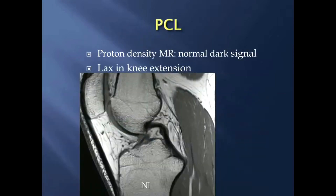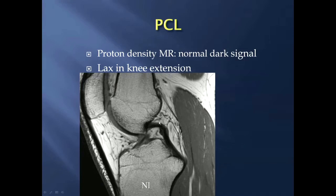Moving on to the posterior cruciate ligament, or PCL. On MRI, on proton density images, it's normally dark signal — noticeably darker than a typical ACL. When the knee is in full extension during MRI, the PCL is a little bit lax, unlike the ACL, so you can't use tautness of fibers as a sign of tearing. Normally it's a little lax and has a somewhat bowed appearance.